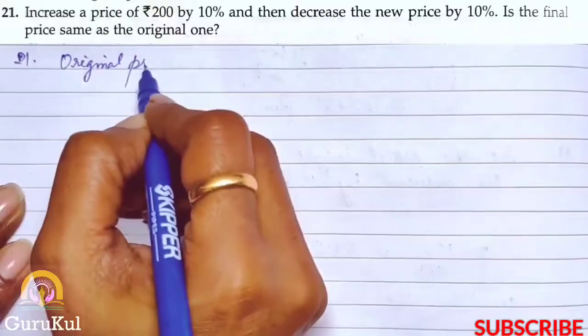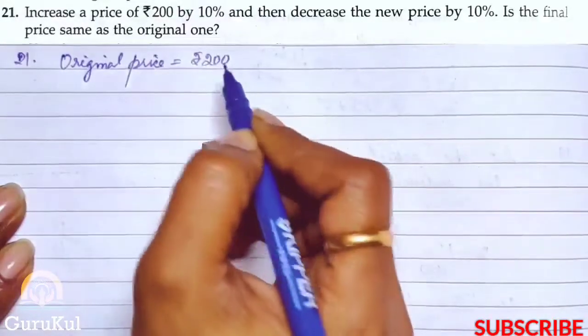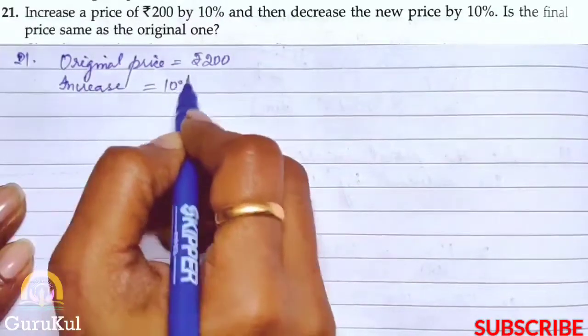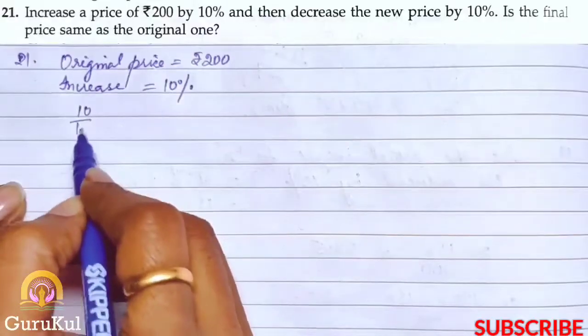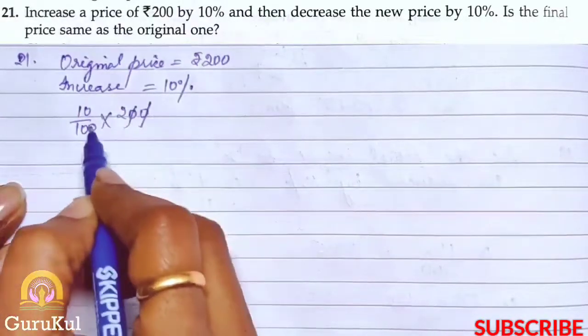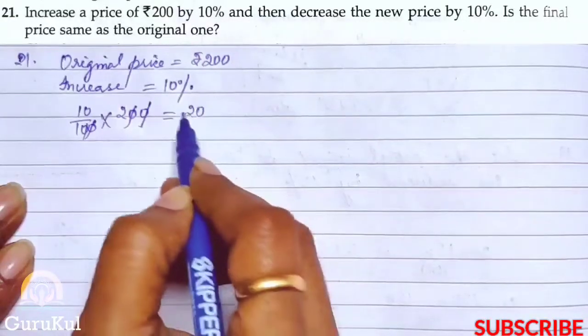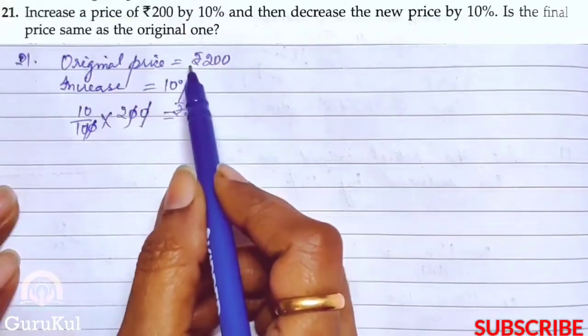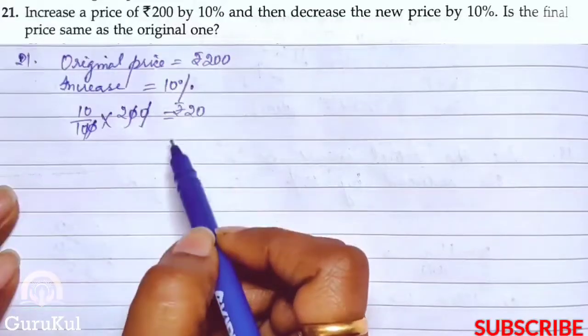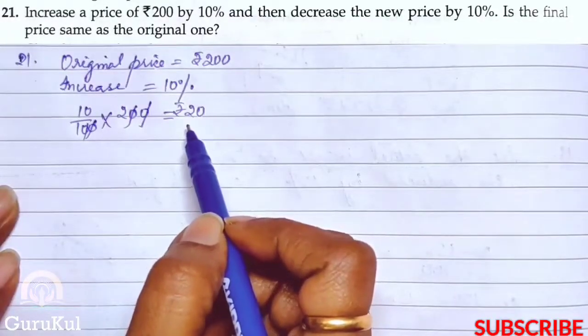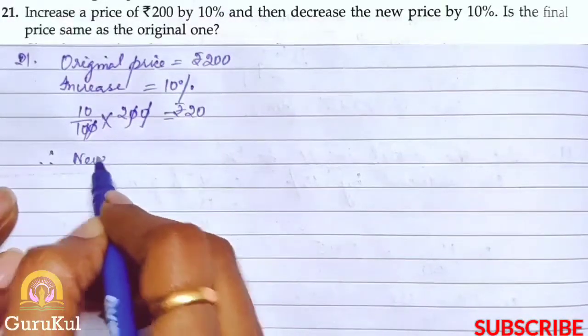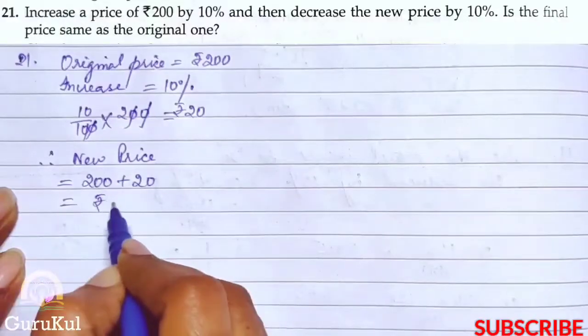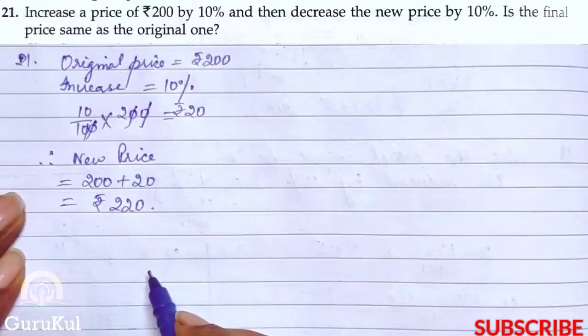Original price is rupees 200. Increase by 10 percent: 10 percent of 200 is Rs. 20. Remember, when there is an increase, we add to the original price. Or when there is a decrease, we subtract from the original. Therefore, new price is equal to 200 plus 20 that gives us rupees 220.